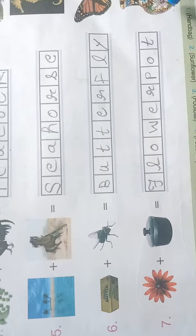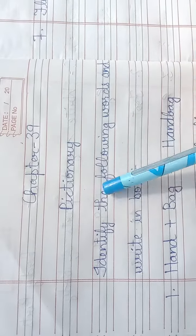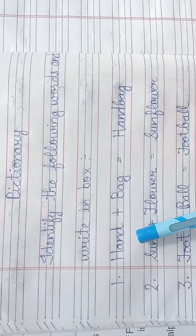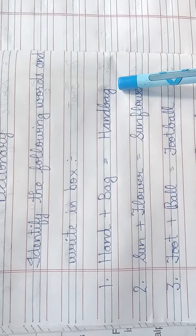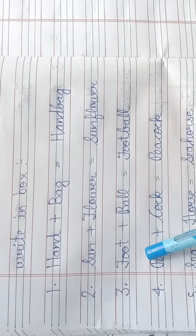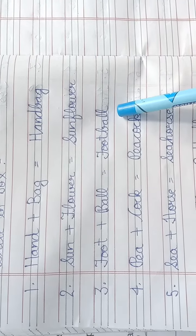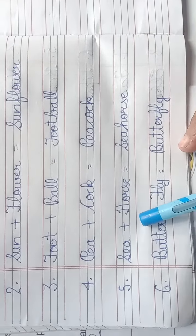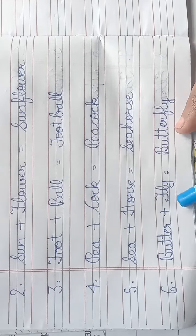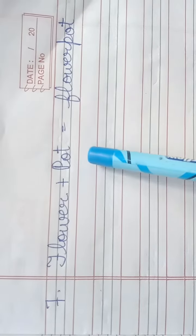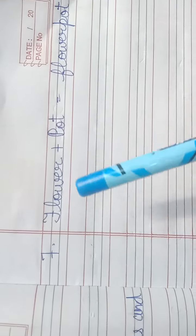अब हमने इसे notebook में भी दिए है। Chapter 39 dictionary - identify the flowing words and writing box. Hand plus bag handbag, sun plus flower sunflower, foot plus ball football, P plus cock peacock, sea plus horse seahorse, butter plus fly butterfly, flower plus pot flowerpot. इनको आपनी notebook भी write करना है।